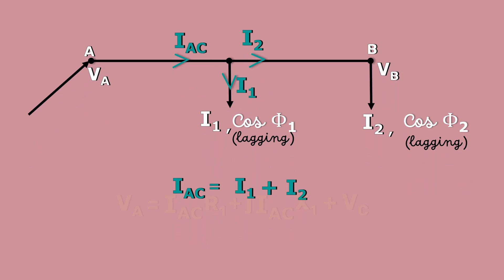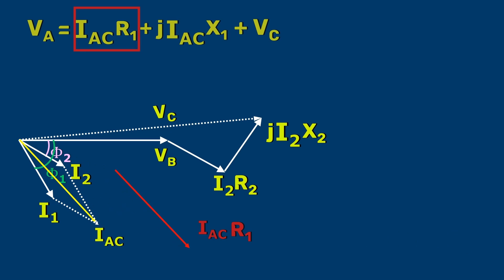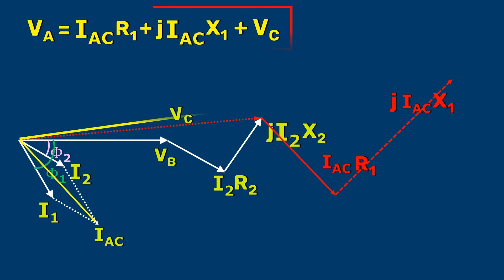Now, let's represent these equations in the vector diagram. IAC can be found using the parallelogram law. Now, we can find IAC R1 and JIAC X1. We already have VC in our vector diagram. Using the head-to-tail method, we can find the resultant VA.